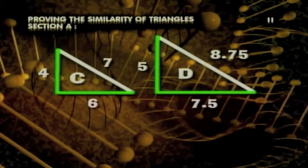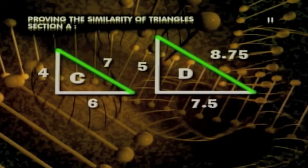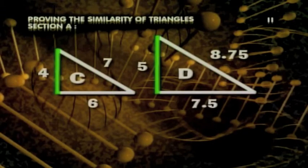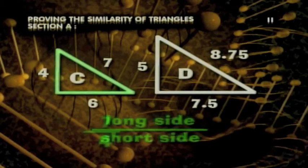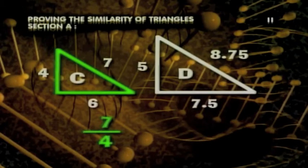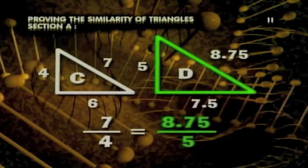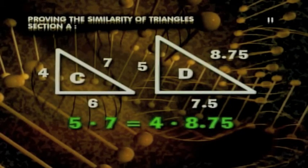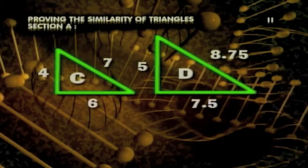We still need to check the long side, so we'll set it over one of the other sides. It doesn't matter which side we choose. Let's go with the shorter side. We'll set our ratio as the long side over the short side. Triangle C's ratio is 7 over 4. This is then set equal to triangle D's 8.75 over 5. Now we cross-multiply for 4 times 8.75 equals 35, as does 7 times 5. All of the sides are in proportion.